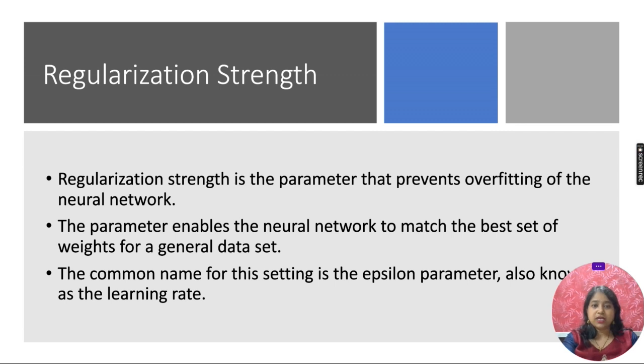Regularization strength is the parameter that prevents overfitting of the neural network. The parameter enables the neural network to match the best set of weights for a general data set. The common name for this setting is called epsilon parameter, also known as the learning rate.